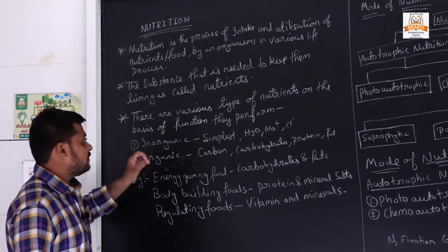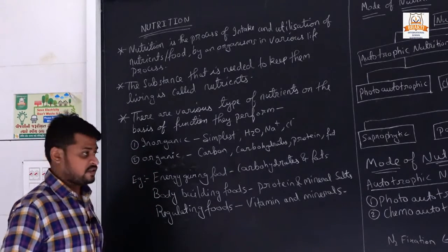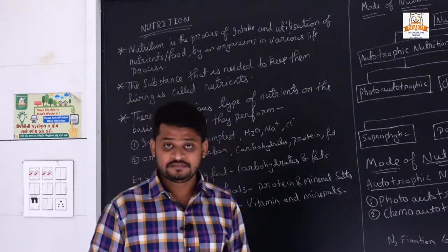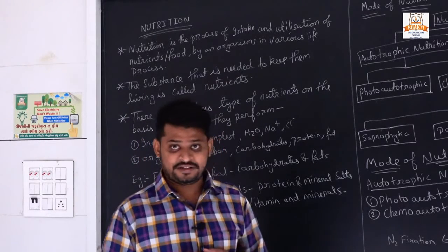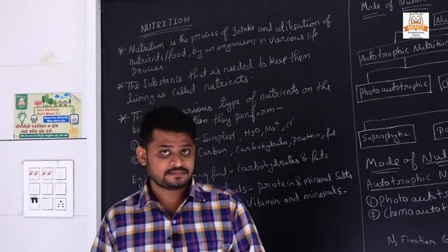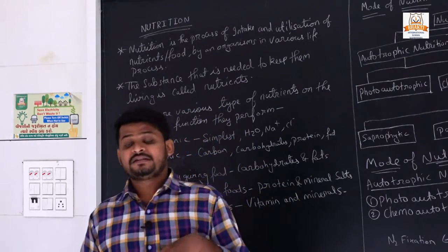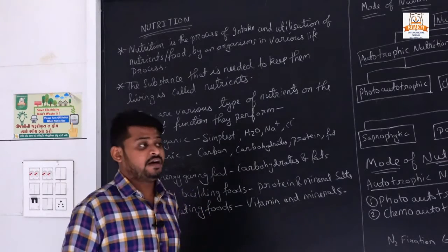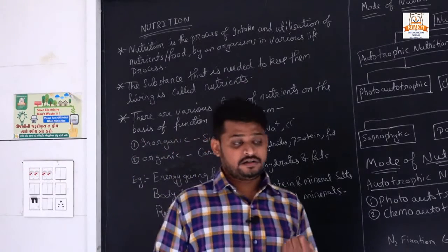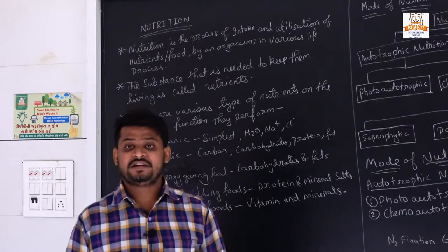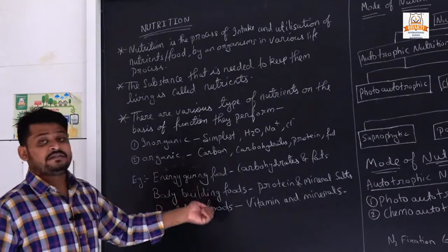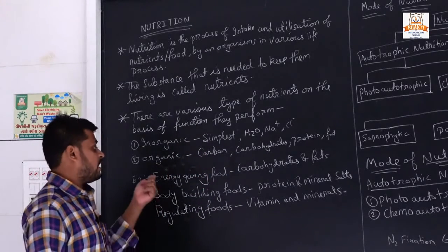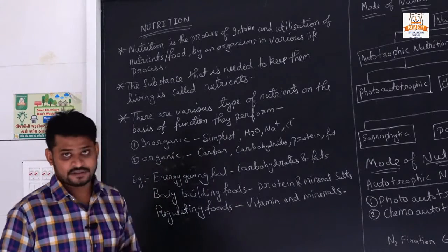Now we will see nutrients on the basis of their functions. First, some nutrients have the work of providing energy to the body - why we are eating is to get energy. Some nutrients give us energy instantly, like carbohydrates and fats. That is why whenever we drink glucose we get instant energy. So food in which carbohydrates and fats are present is called energy-giving food.